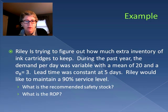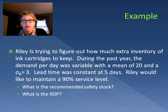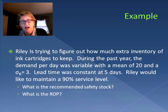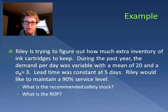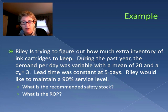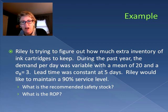Here's a simple example: Riley is trying to figure out how much extra inventory of ink cartridges to keep. During the past year, the demand per day was variable with a mean of 20 and a standard deviation of 3, and the lead time was constant at 5 days. Riley wants to maintain a 90% service level — we want to find the safety stock and the reorder point. Notice the demand is variable (we're given a mean and standard deviation) but the lead time is constant at 5 days.